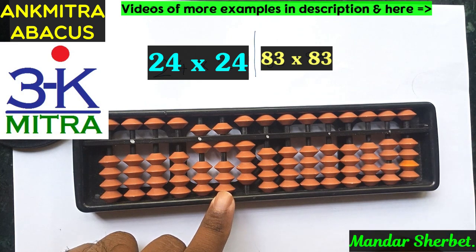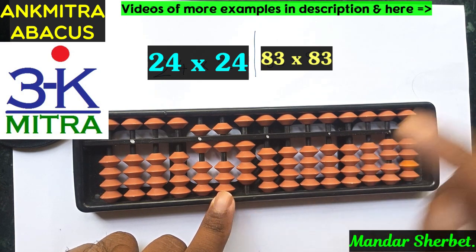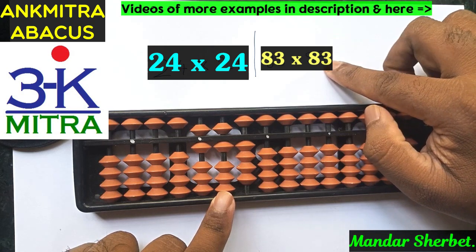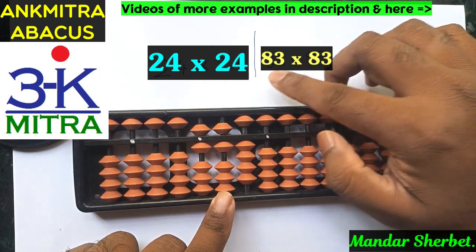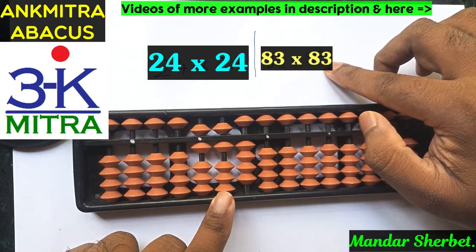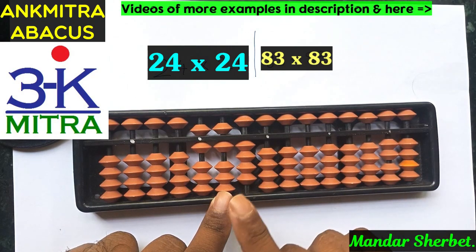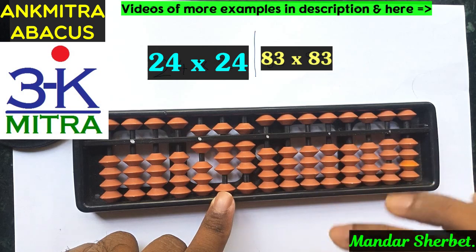For the next part of the calculation I remain on the third rod. From the third rod I take the units place digit 3 and multiply it with the tens place digit of the other number. So 3 multiplied by 8 is 24, and I add 24 from this third rod: twenty and four.